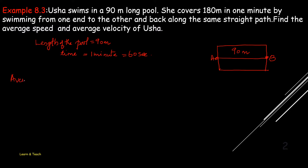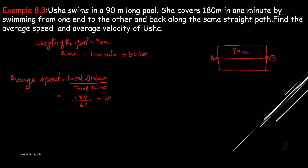Average speed equals total distance divided by total time. The total distance: A to B is 90 meters, then B to A is also 90 meters, so 90 plus 90 equals 180 meters. Total time is 60 seconds. So average speed equals 180 divided by 60, which is 3 meters per second.